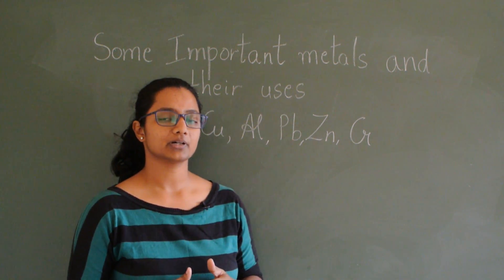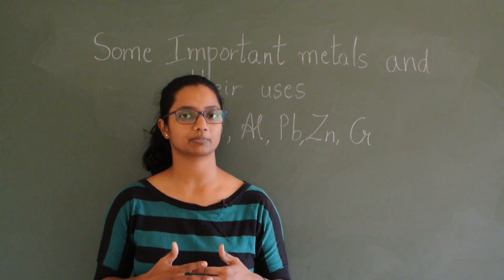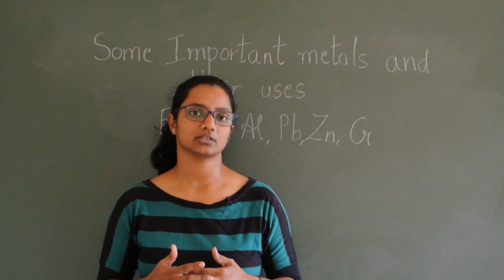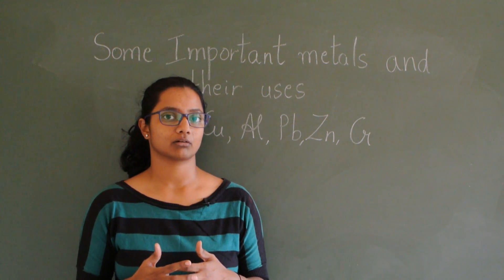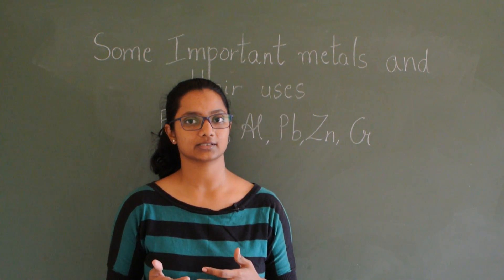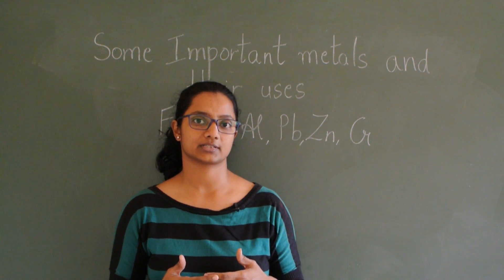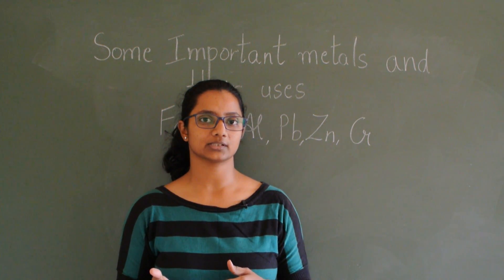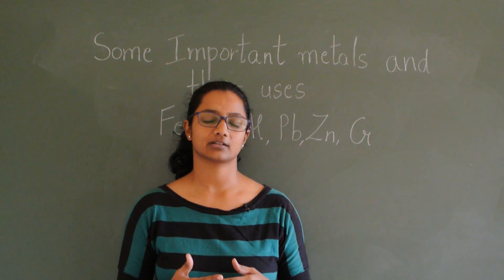Copper appears to be reddish brown in colour. Copper has a unique property — it is a very good conductor of electricity, and that is why it is used in the manufacturing of electric wires. Copper also does not react with water, so it is used in making vessels, water pipes, and industrial boilers for heating water. Some utensils and vessels have a copper bottom because copper gets heated very fast.